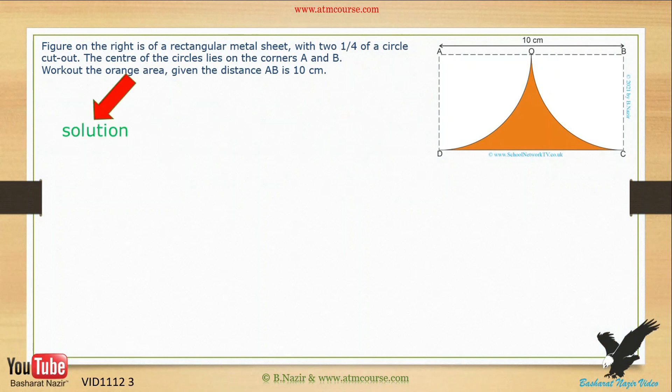To begin with, write down the word solution to show this is the start of the answer. Now read the question once again, and while doing this, extract the key information, like this. There is only one key information in this question. This key information is the distance AB is 10 centimeters. Write this down after the solution.